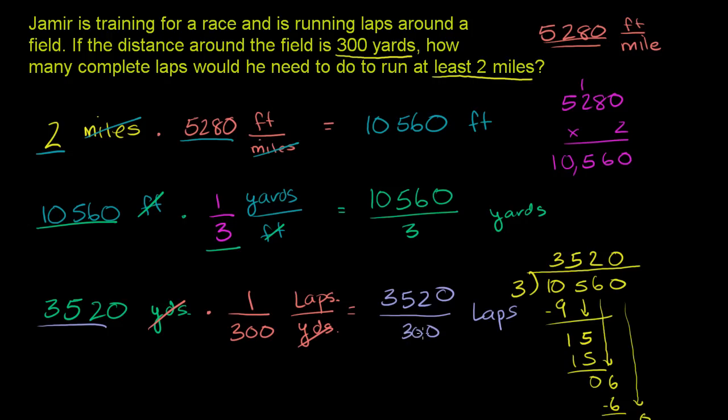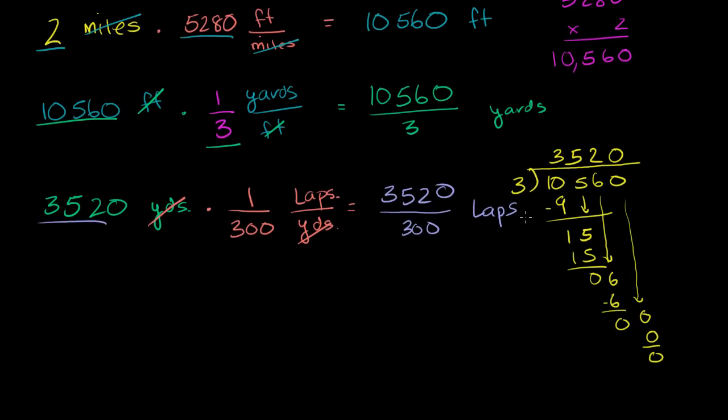So 3,520 divided by 300. Well, we can eyeball this right here. What is 11 times 300? If we did 11 times 300, what is that going to be equal to? 11 times 3 is 33, and then we have two 0's here. So this will be 3,300. So it's a little bit smaller than that. If we have 12 times 300, what is that going to be? 12 times 3 is 36, and then we have these two 0's. So it's equal to 3,600.